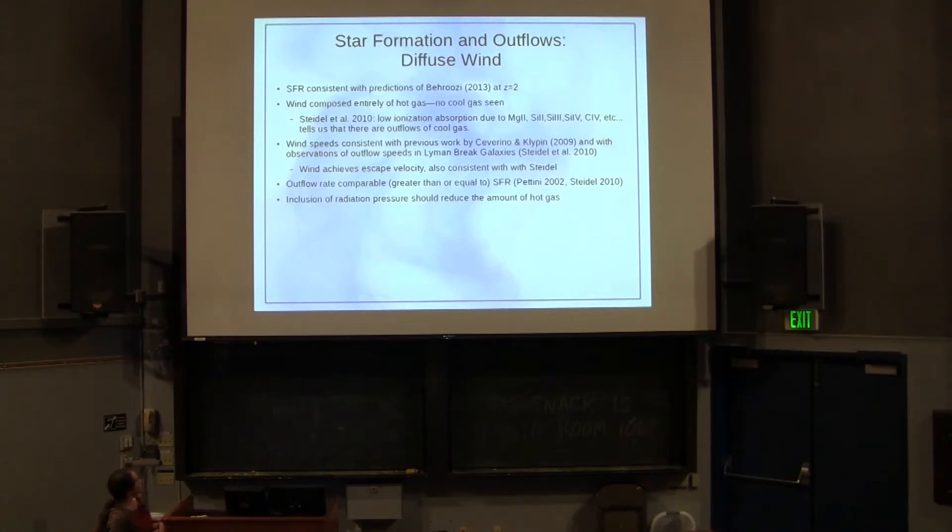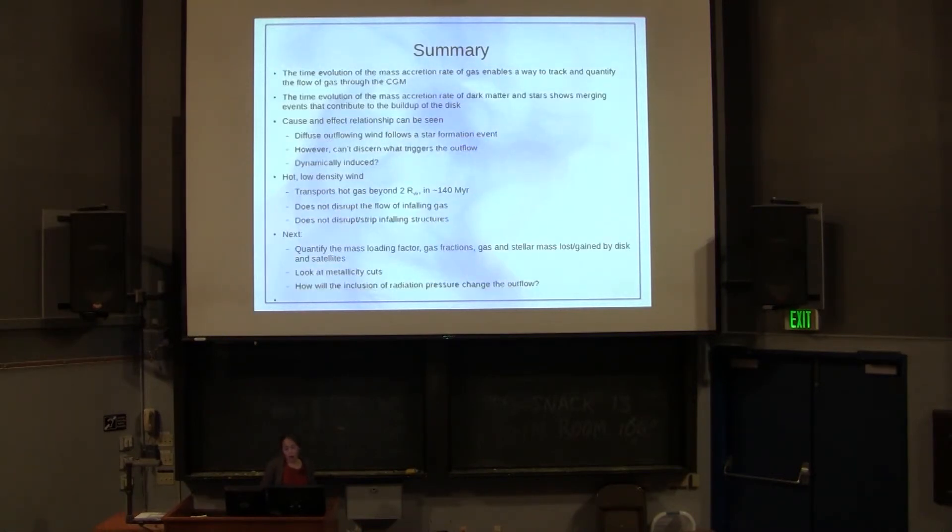The wind speeds are consistent with previous work, Steidel, Lyman break galaxies, and Severino and Clippen. The wind does achieve escape velocity, it's greater than escape velocity, so it will definitely leave the halo. The outflow rate is greater than or equal to the star formation rate, which is consistent with Pettini and Steidel. So what our model did not have was radiation pressure, which should presumably reduce the amount of hot gas or increase the amount of cool gas that gets thrown out.